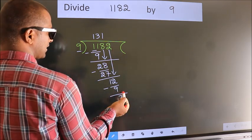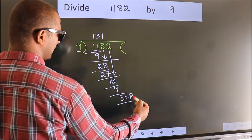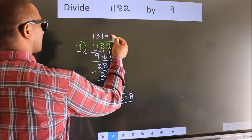No more numbers to bring down, so we stop here. This is our remainder. This is our quotient.